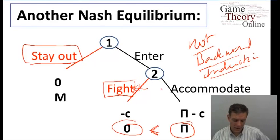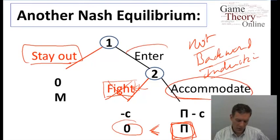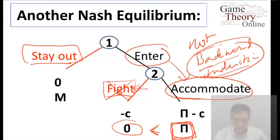then indeed this is not a prediction which is credible in the sense that firm 2 shouldn't fight if firm 1 enters, it wouldn't be maximizing its payoff and it's foregoing profits. So we end up with enter and accommodate being the backward induction solution.